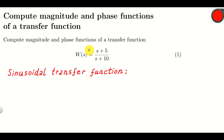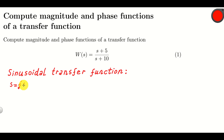Before we solve this particular problem, let us first briefly revise the concepts of magnitude and phase functions of a transfer function. To define magnitude and phase functions we first need to define the sinusoidal transfer function. The sinusoidal transfer function is obtained from our original transfer function by replacing s by j omega, where j is the imaginary unit, that is j equals the square root of minus 1.